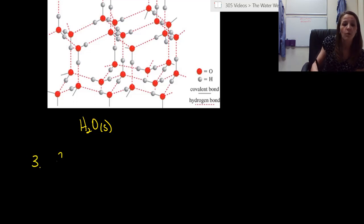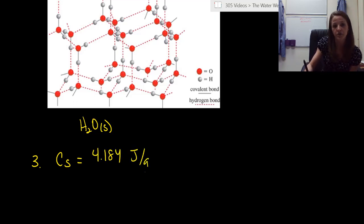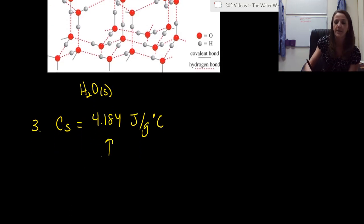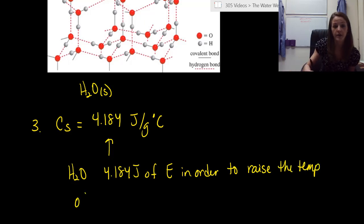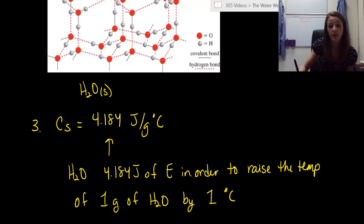All right. Last thing I want to point out here is that water has a ludicrously high specific heat capacity. It is 4.184 joules per gram degree Celsius. So let's break down what that means. Again, I know it's been a while since we've talked about it. So what that means is that water requires 4.184 joules of energy in order to raise the temperature of one gram of water by one degree Celsius. Okay. So just let your unit tell you what's happening when you're looking at specific heat capacity. So it takes 4.184 joules of energy in order to raise the temperature of just one gram of water by one degree Celsius. That is such a high amount of energy. That's such a high number.